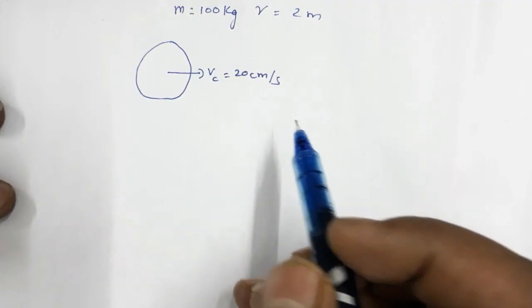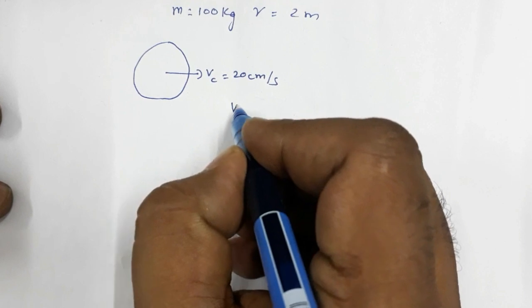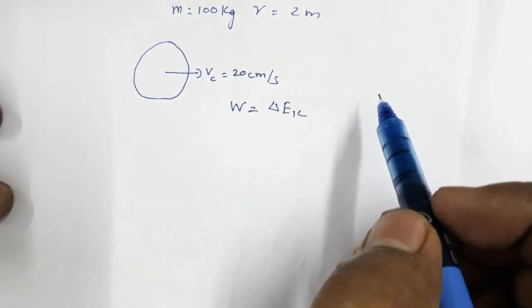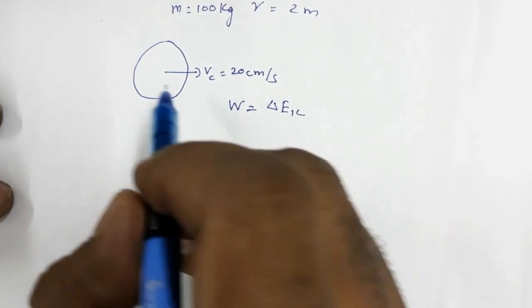Here we'll be using the work-energy theorem, that is work done equals the change in kinetic energy. Now here the final kinetic energy is zero, so the work done will be the kinetic energy of the disk. So that is the work done required to stop the disk.